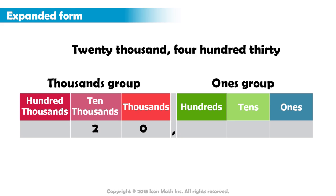Then comes the comma, which separates the groups and makes the number easier to read. Now, this is the ones group. It contains the number 430.